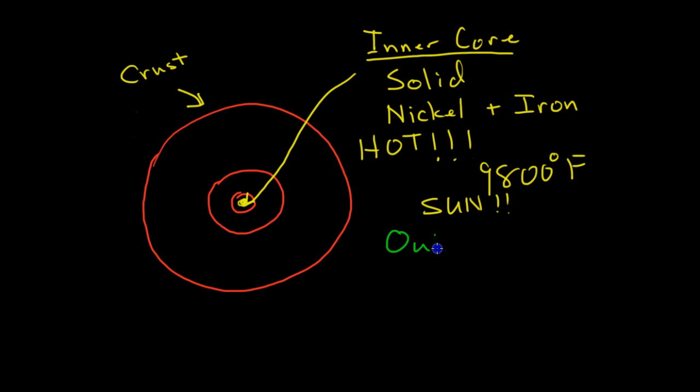And then moving outward it gets a little bit cooler when you get to the outer core, maybe a thousand degrees cooler or something like that. And the outer core is a liquid, but it's made of the same stuff - liquid iron and nickel.